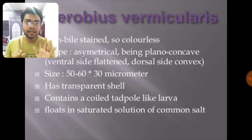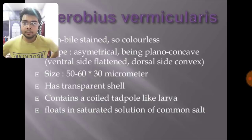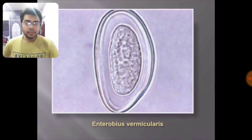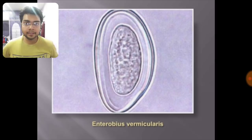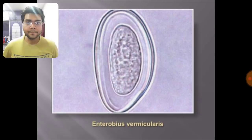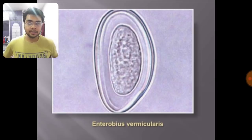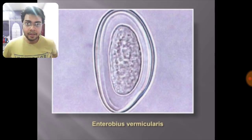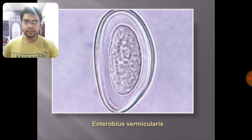Enterobius vermicularis eggs are also non-bile stained, therefore colorless and transparent. The shell contains a coiled tadpole-like larva, and these also float in saturated salt solution. This was just a basic video to give you a general idea about the ova, cysts, and eggs. I think you won't make mistakes now. There is nothing to worry about with AIIMS — just have full confidence and you will surely do it. This is Dr. Shivam signing off. Have confidence and put in your 100% effort. Thank you.